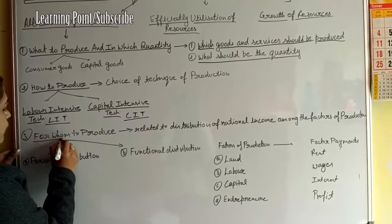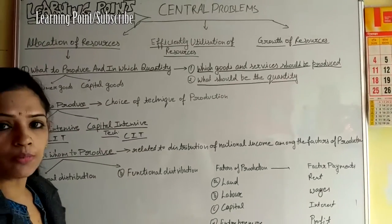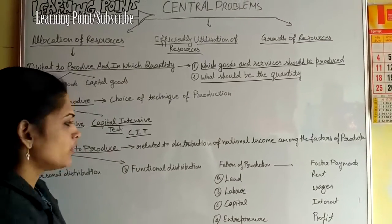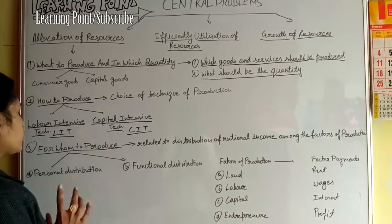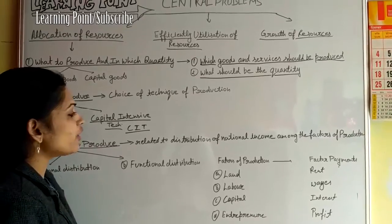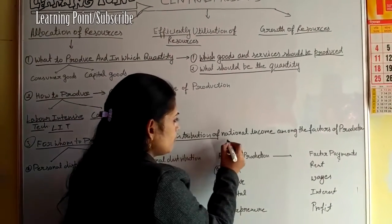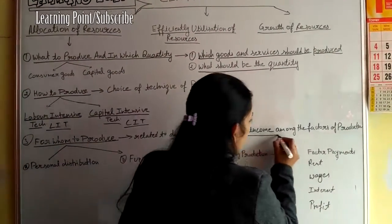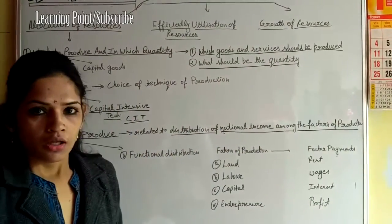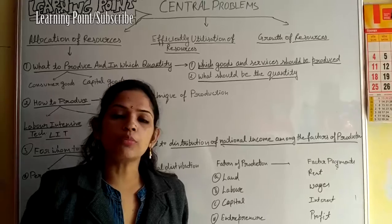The third central problem is for whom to produce, which is related to the allocation of resources. For whom to produce is related to the distribution of national income among the factors of production — how to distribute our national income or national product.